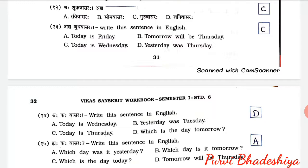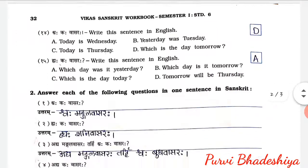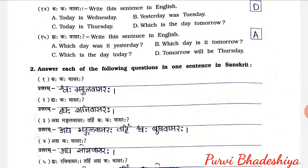13. Adhyah Bhuddha Vasaraha. Write this sentence in English. The answer is: Today is Wednesday. 14. Swaha Kaha Vasaraha. Write this sentence in English. Answer is D. Which is the day tomorrow?